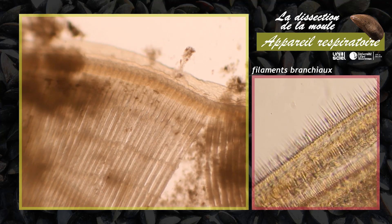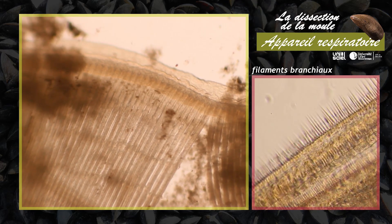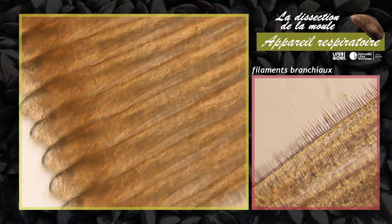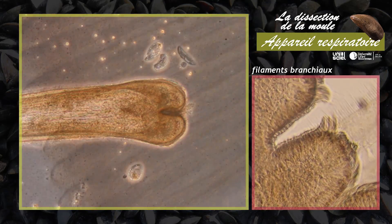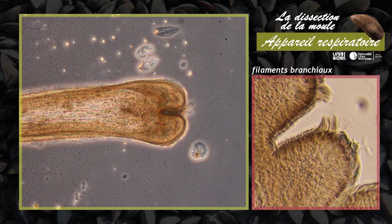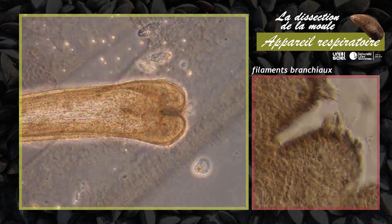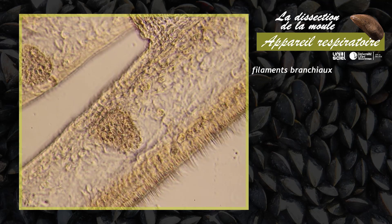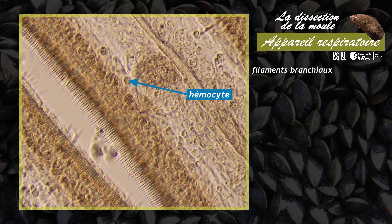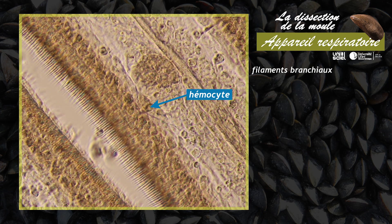La cohésion de la branchie est assurée par des jonctions ciliaires interfilaments. Le battement de milliers de cils qui tapissent les filaments est visible à fort grossissement. Ce battement ciliaire assure la circulation de l'eau dans la cavité paléale et les échanges respiratoires entre l'eau et l'hémolymphe qui irrigue la branchie. Des hémocytes à rôle immunitaire sont présents dans les lacunes entraînées par la circulation sanguine.